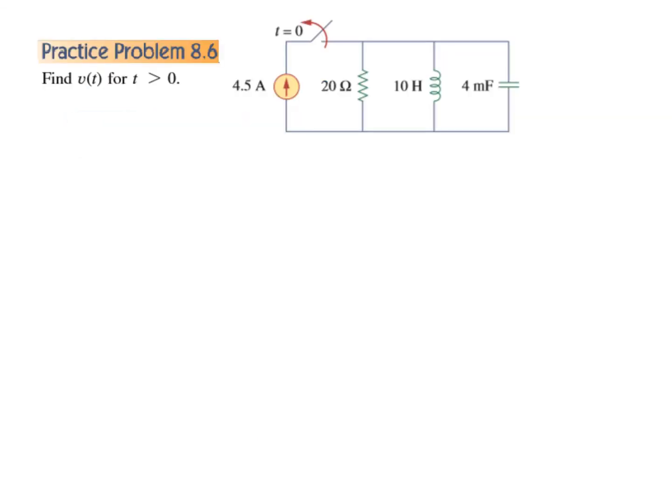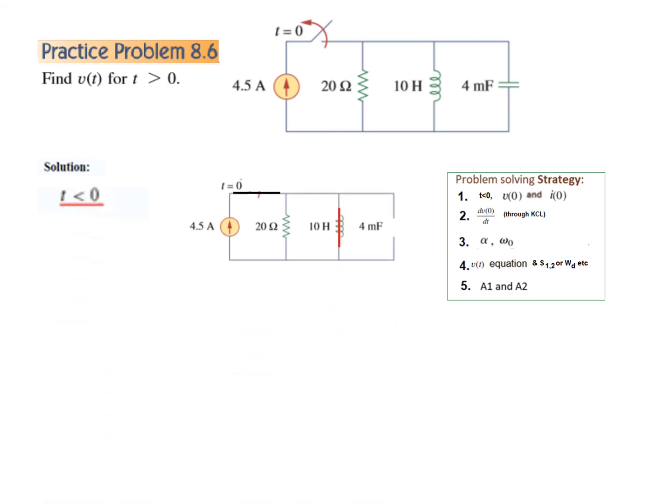Now we come to the practice problem. The current 4.5 ampere is flowing and charging the capacitor and inductor before t equals 0. At t equals 0 this is open. We have to find V(t). For t less than 0 our circuit will be like this. This switch is closed. Inductor will behave like a short circuit. Capacitor is fully charged and behaves like an open circuit. From here you can see that the current will only flow through this path because this is the shortest path, short circuit, no resistance in this path. So the total current 4.5 ampere will flow through the inductor. That means I0 will be 4.5 ampere.